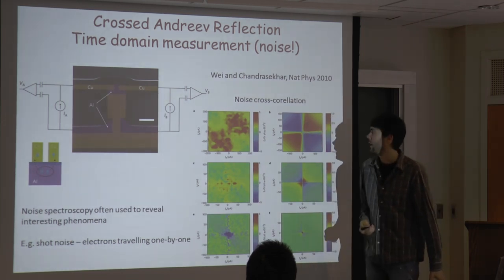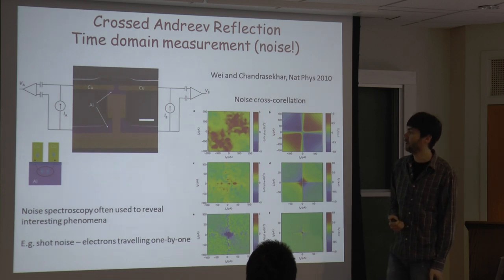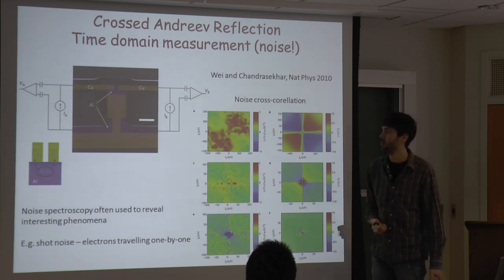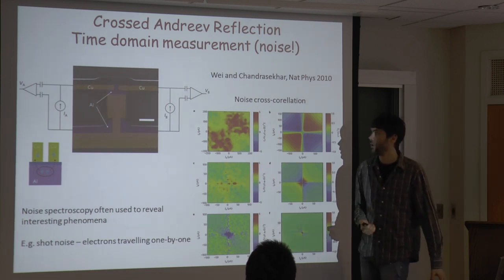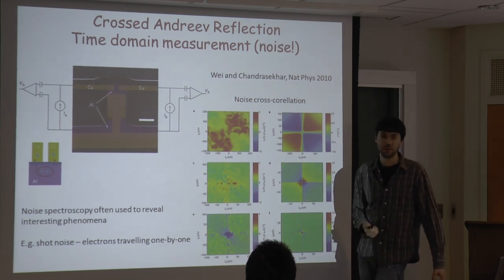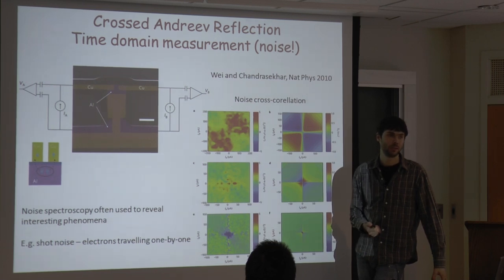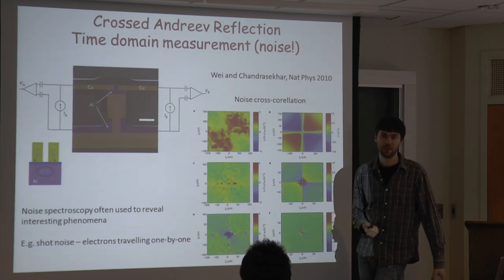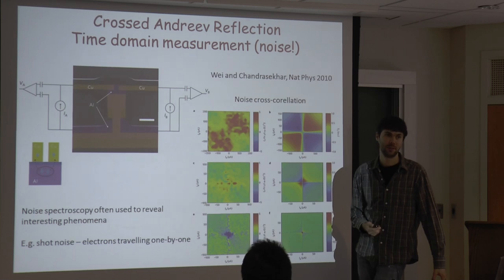We'll stop here. Next lecture will be about supercurrents flowing from one superconductor to the other through a normal barrier — that's the Josephson effect.